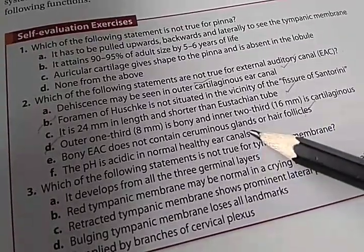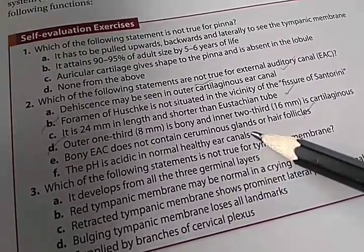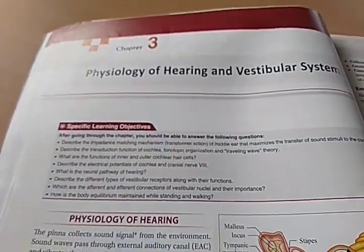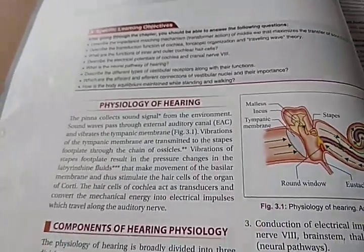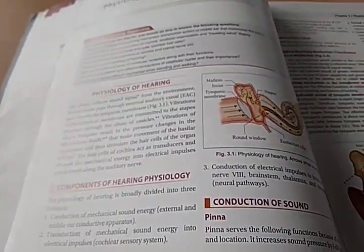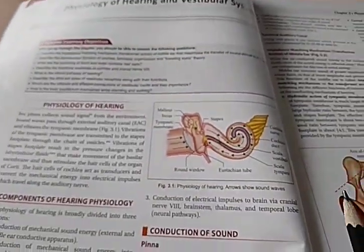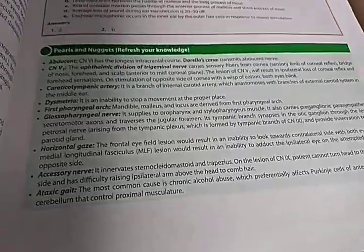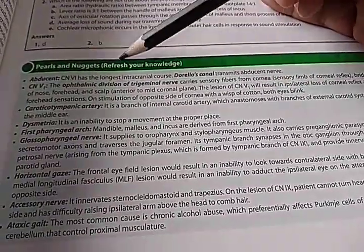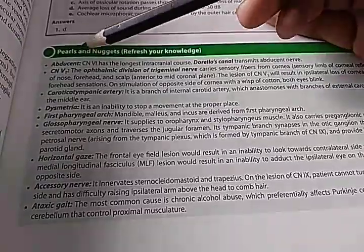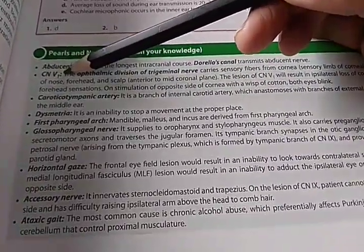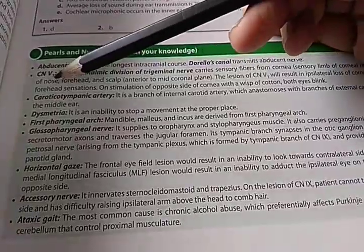Physiology of hearing and vestibular system — how exactly is the mechanism of hearing, what makes us differentiate so many frequencies? This chapter has some pearls and nuggets to refresh your knowledge. There are also reminders such as: abducens is cranial nerve 6, fifth cranial nerve ophthalmic division is V1, dysmetria, first pharyngeal arch, glossopharyngeal nerve.